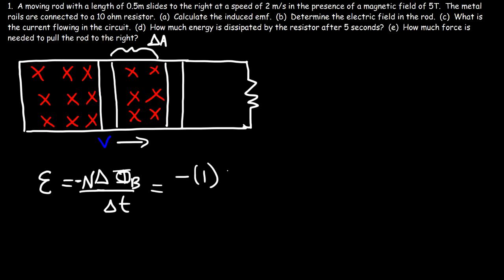So the flux is going to be B times the change in area times cosine theta. However, theta — which is the angle between the normal line of the face of the coil and the magnetic field — those two are basically parallel to each other, so that's zero degrees. Cosine of zero is 1, so divided by the change in time.